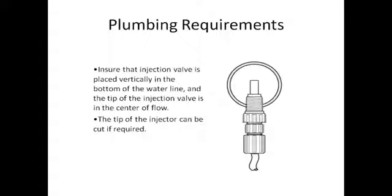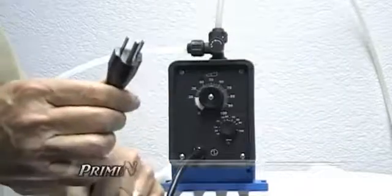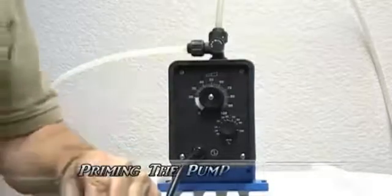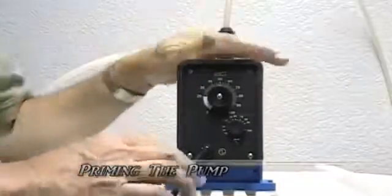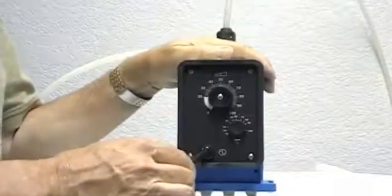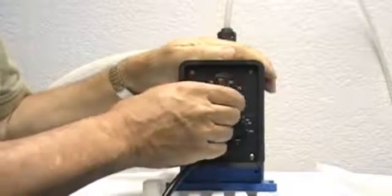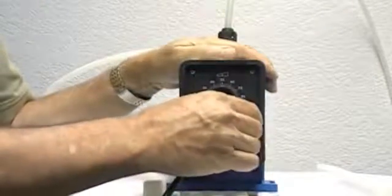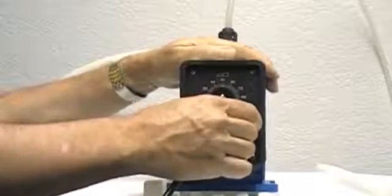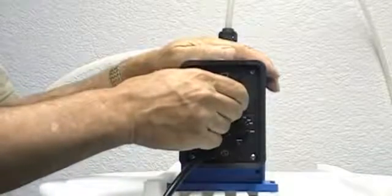In order to prime your pump, plug the cord into an appropriate receptacle. Please use a surge protector for the power supply of the cord. Be sure that the stroke length is adjusted to 100% and that the stroke rate is adjusted to 100%. Never adjust the stroke length while the pump is not running.